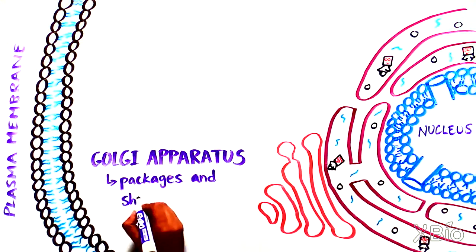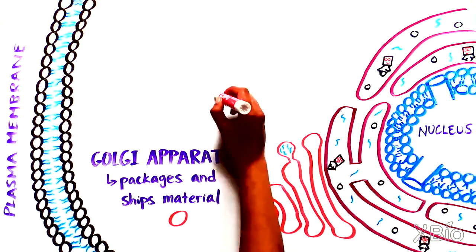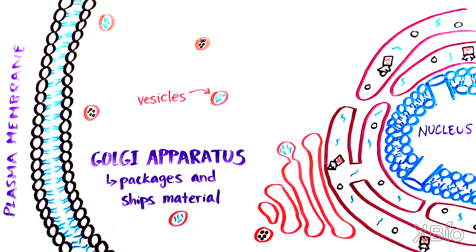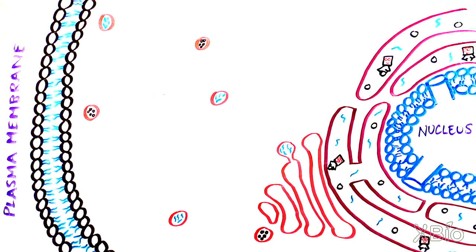The Golgi apparatus repackages these proteins in small shipping containers, called vesicles, that get delivered to various other organelles and the plasma membrane. How does this delivery occur?